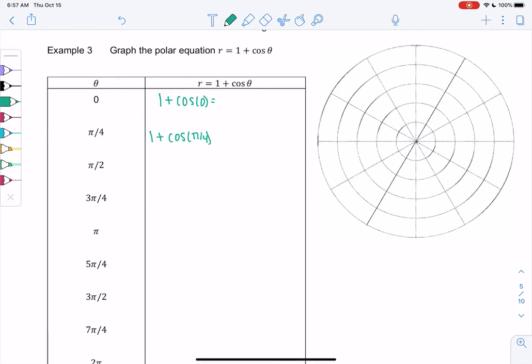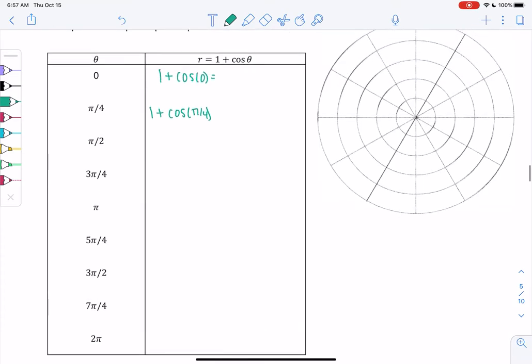Why don't you pause the video and plug in all the angles for theta. 1 plus cosine 0, 1 plus cosine pi over 4, all the way down to 2 pi. Pause the video so you can get some practice with your trig and then unpause once you've filled out the table. I'm just going to start filling it in and then I'll talk you through it, hoping that you're just checking your answers and not doing them with me.